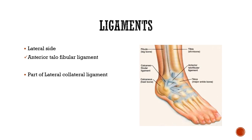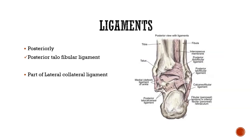On the lateral side, the talus consists of part of the lateral collateral ligament. The part present anteriorly is the anterior talofibular ligament — this is your talus, this is your fibula, so this is your anterior talofibular ligament on the lateral part. On the posterior part, it also has part of the lateral collateral ligament: the posterior talofibular ligament.